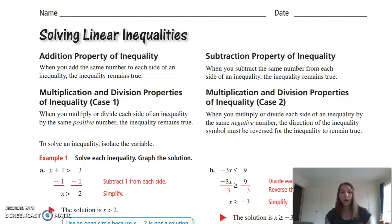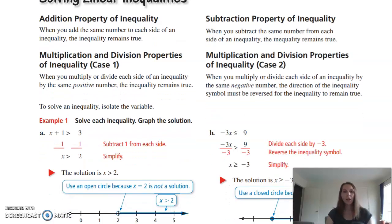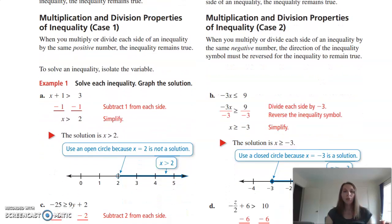When you multiply or divide each side of an inequality by the same negative number, the direction of the inequality symbol must be reversed for the inequality to remain true. So when we are multiplying or dividing by a negative number, we are going to flip the sign. In solving an inequality, isolate the variable — make the variable be on one side and the number on the other.